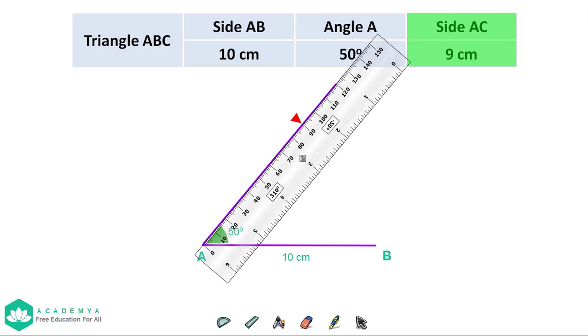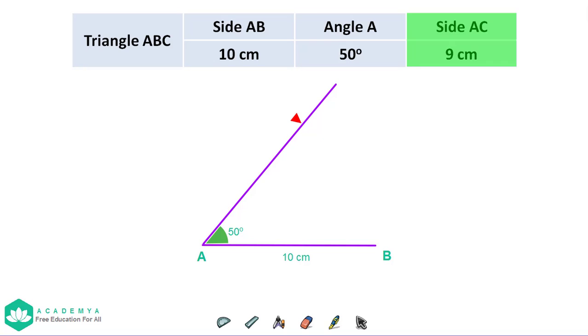Third step, using a ruler, mark a point 9 centimeters away from A. This will be point C.